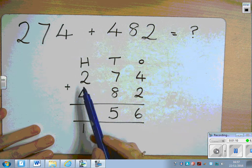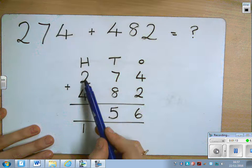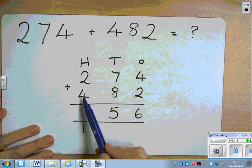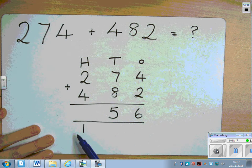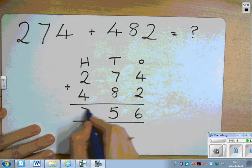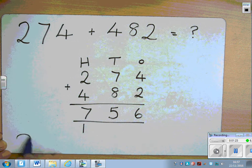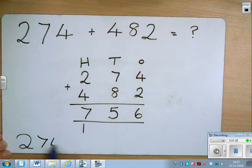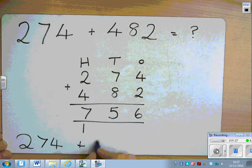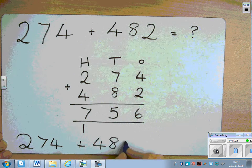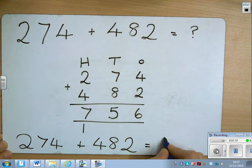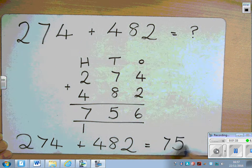Then looking at our hundreds column, we have two hundreds and four hundreds and one hundred, which all together makes seven hundreds. Therefore, two hundred and seventy-four add 482 equals seven hundred and fifty-six.